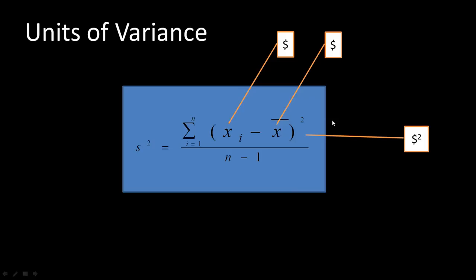The numerator is the sum of dollars squared, so the units of the numerator are dollars squared. You divide by n-1, which has no units, so ultimately variance has units of dollars squared. In general, variance has units which are the square of the units in which the individual observations are measured.